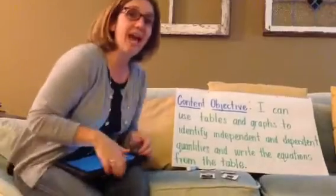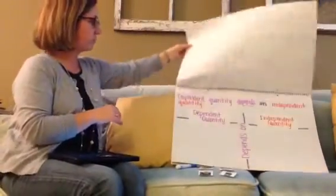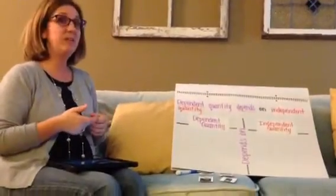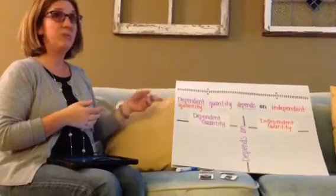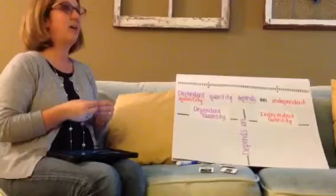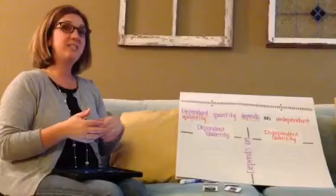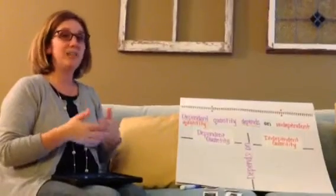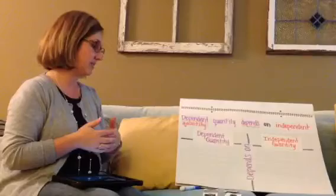Now let's look at independent and dependent variables. One way to know the difference between them is remembering this phrase: dependent quantity depends on independent quantity. Dependent depends. Let's look at some examples so we can think about the relationship between a dependent quantity and an independent quantity.